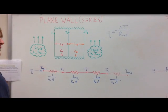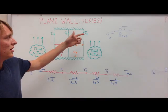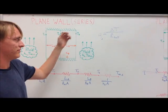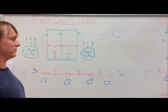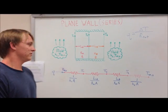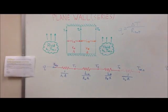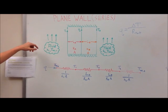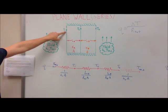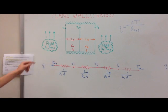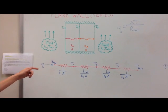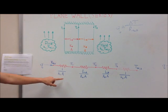To calculate our heat rate, we know it is equal to the temperature distribution over our total resistance, so we need to find all of our resistances. The first resistance is from the fluid to the surface temperature T1, and it is equal to one over the convection coefficient times the area.